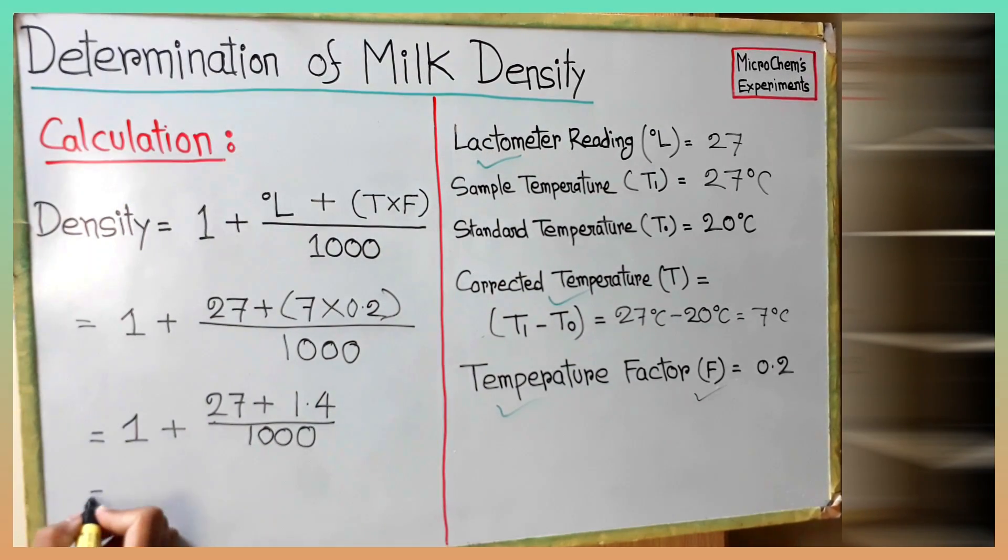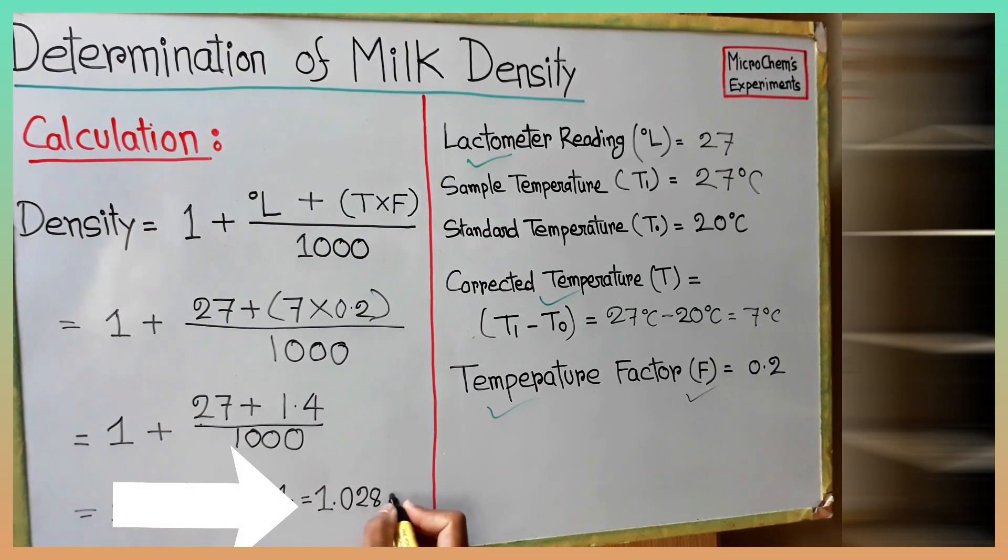By solving the equation, we get the density or specific gravity of the milk sample is 1.028 grams per ml.